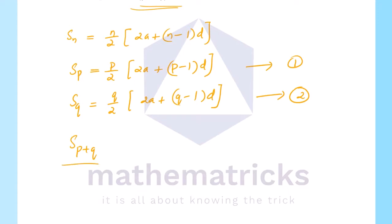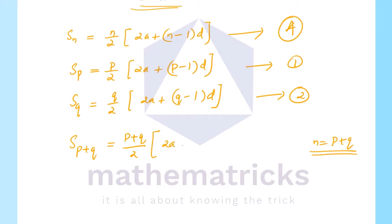For S(p+q), we substitute n = p+q into the formula: S(p+q) = (p+q)/2 into (2a + (p+q-1)d). This will be equation 3.